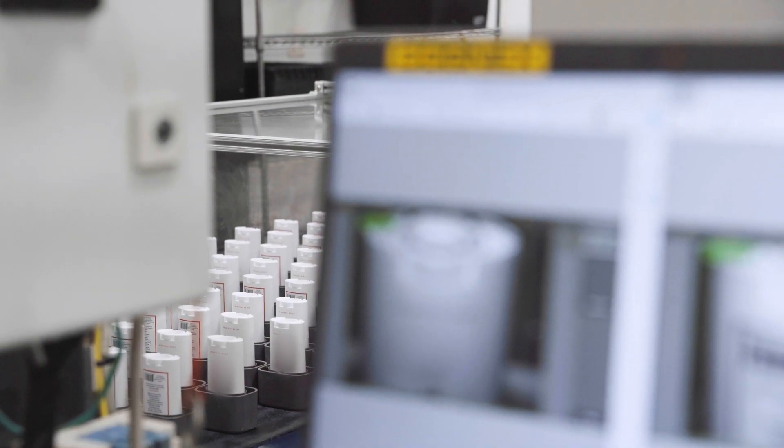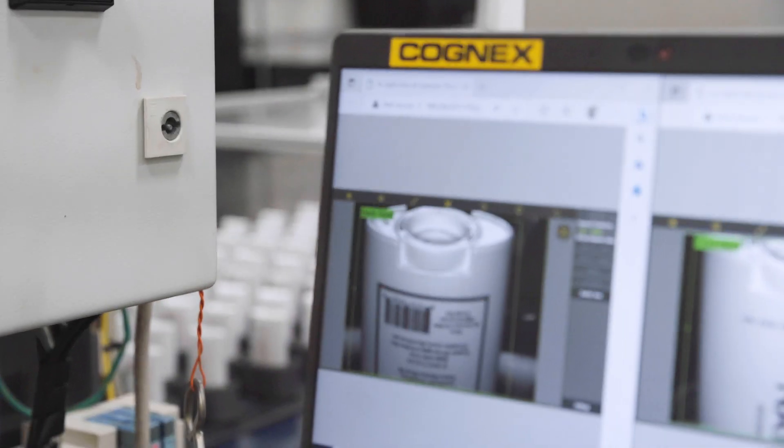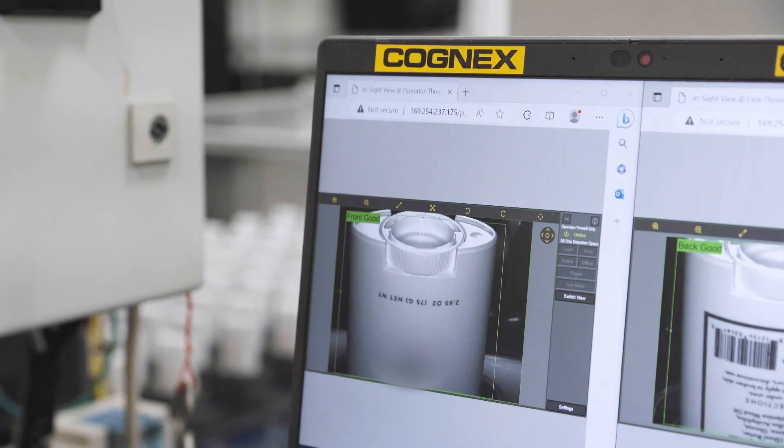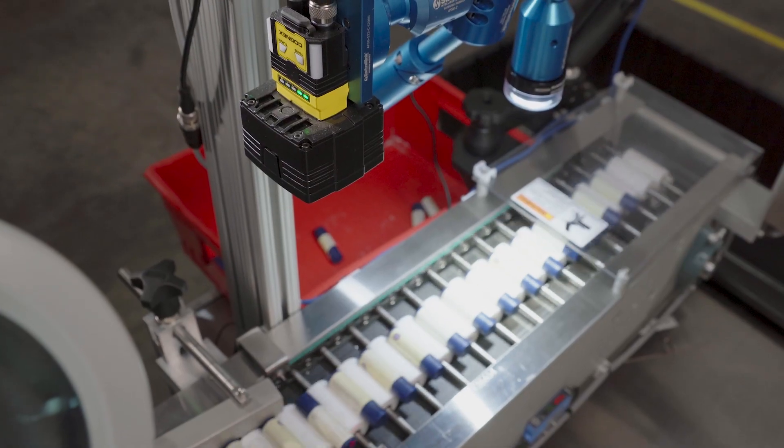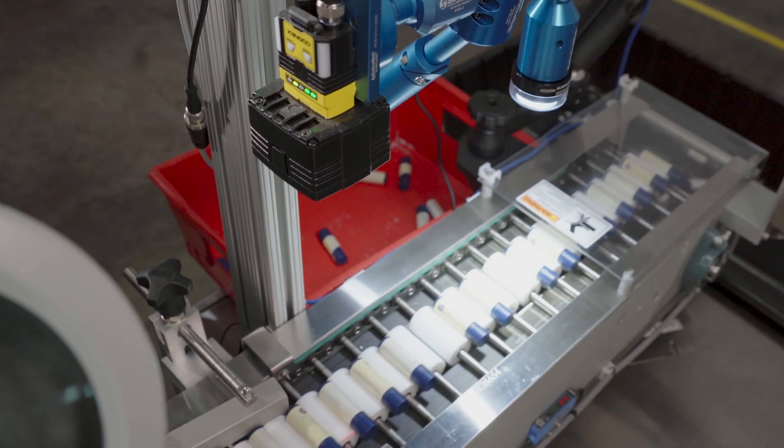The edge learning allows us to basically load pictures of bad examples and pictures of good examples. We can change over a line to a new product much quicker than we traditionally would be able to. We can have a vision system up and running within 20 minutes whereas before it would be a full day.